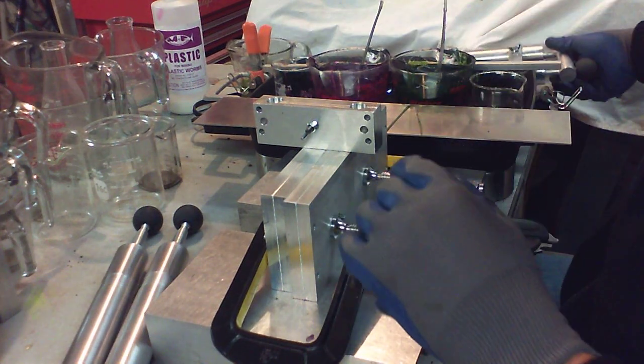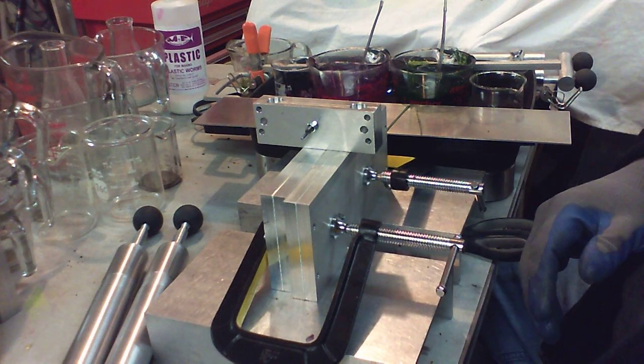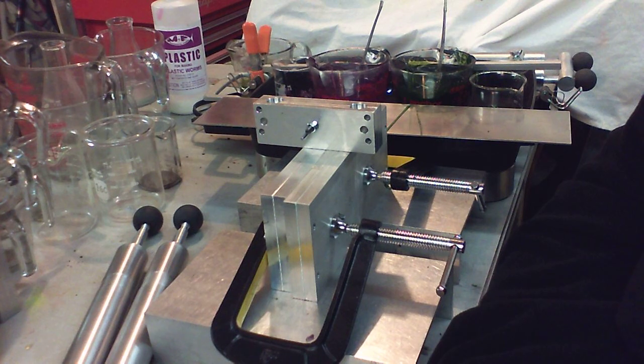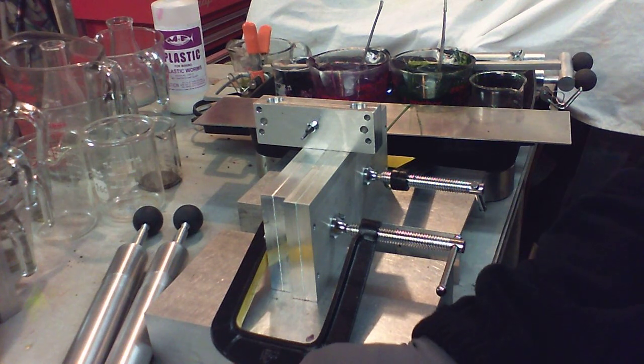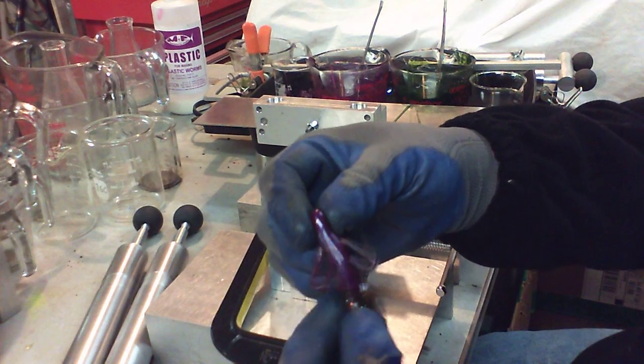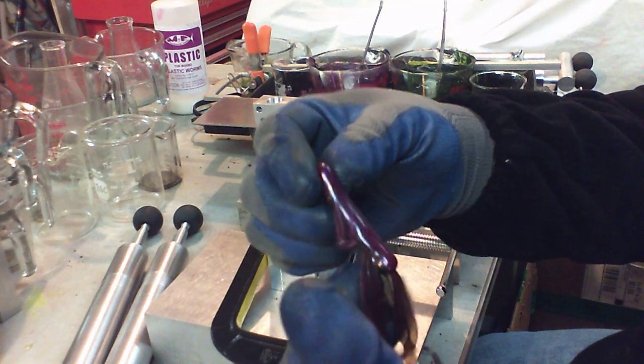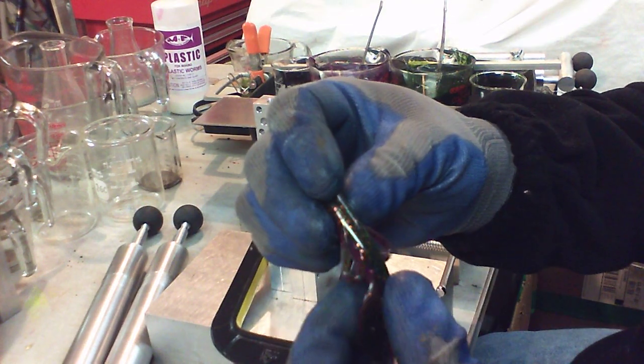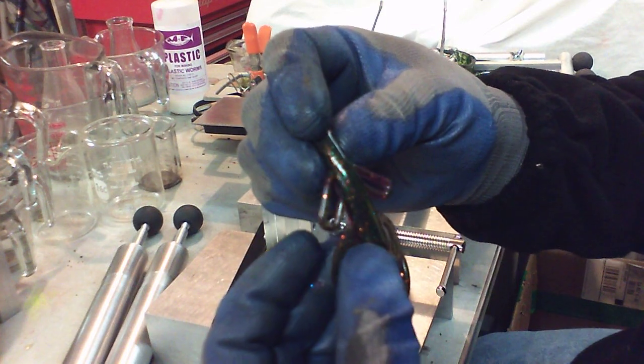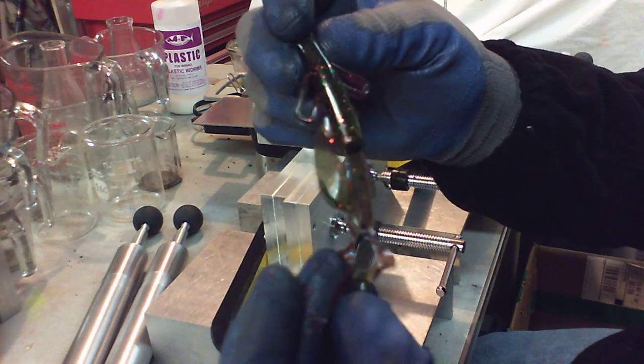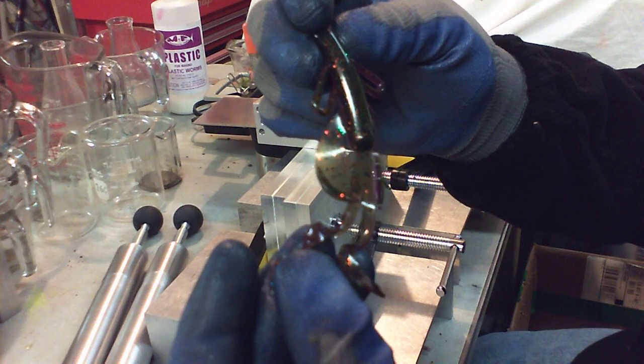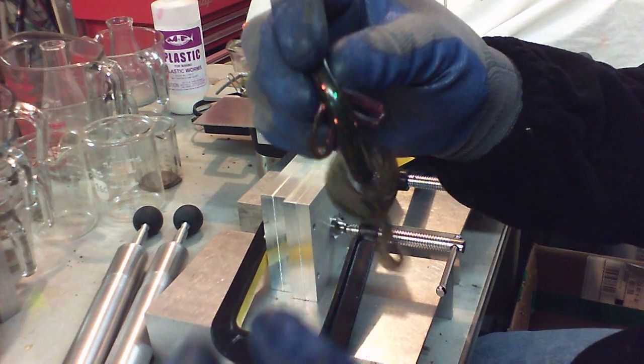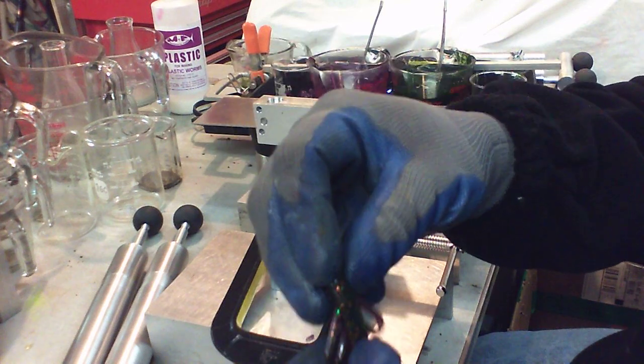Now this unit here, once you get used to it, which there's not really much of a learning curve because of the way it's designed, it makes it pretty easy. But you can get a really good 50-50 bait. That bait right there is 50-50. Even on the little arms here, it's 50-50. On the tails, if you look at the side view of it, it is actually 50-50 on the tails too. So it's not just the big parts, it's actually the whole bait.